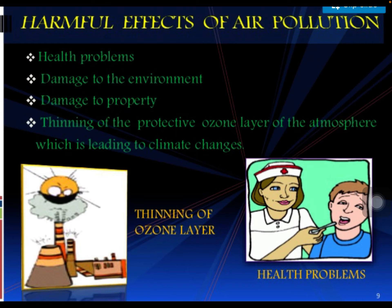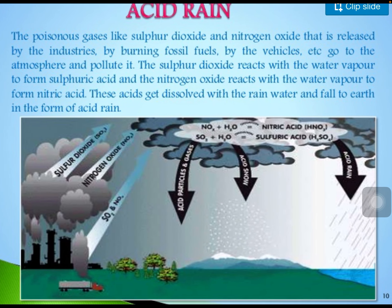When air pollution occurs, it causes the thinning of the ozone layer. The ozone layer in our atmosphere protects us from harmful UV rays. Due to air pollution, this layer is becoming thinner (thinning), and as a result, many climatic changes are also occurring.